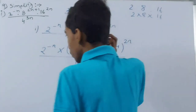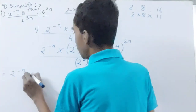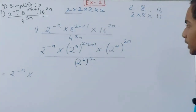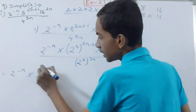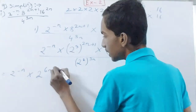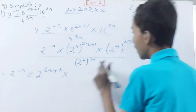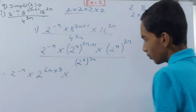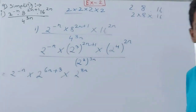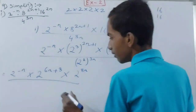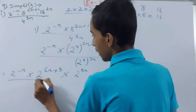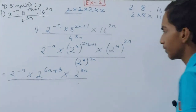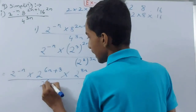Now opening the brackets, the powers multiply: 2³ whole to the power (2n+1) gives 2^(6n+3), since 3×2n = 6n and 3×1 = 3. Then 2⁴ whole to the power 2n gives 2^8n. In the denominator, 2² whole to the power 3n gives 2^6n, since 2×3n = 6n.